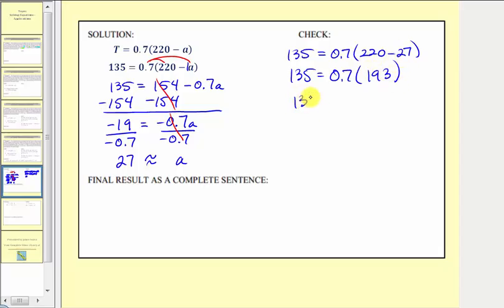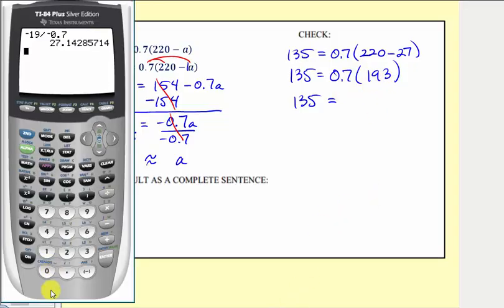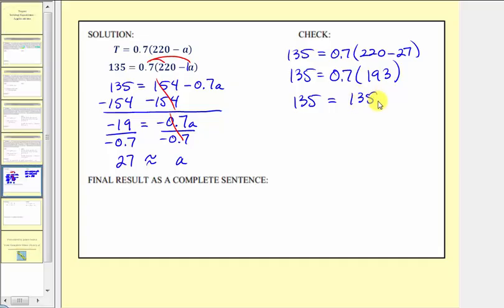So we have 135 equals, and now we'll find this product on the calculator, 0.7 times 193. Notice how it's not 135, it's actually 135.1. So this is not exactly true. But because we rounded A, we do have a rounding error. Let's go ahead and say that 135 is approximately equal to 135.1, and therefore, even though our answer is not exact, it checks because of our rounding error.